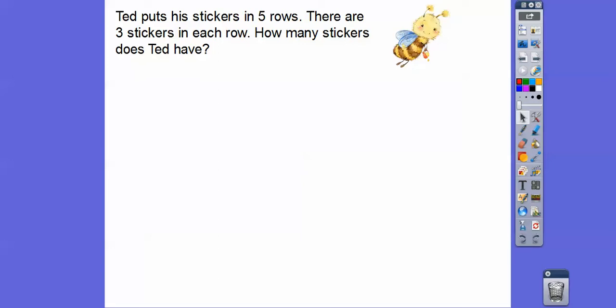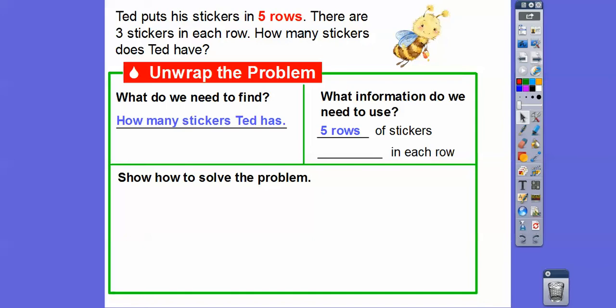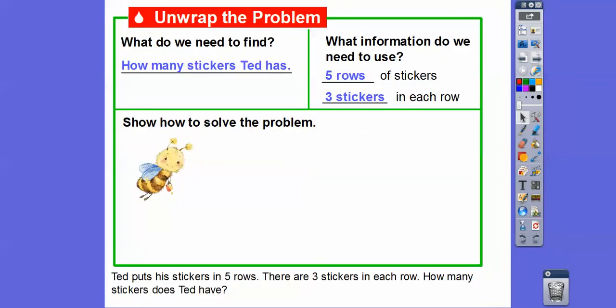There are three stickers in each of those five rows. How many stickers does Ted have? So what do we need to find? We need to find how many stickers Ted has — that's always the last sentence. What information are we going to use? We have five rows of stickers, and there are three stickers in each row. So we have five rows of three stickers.